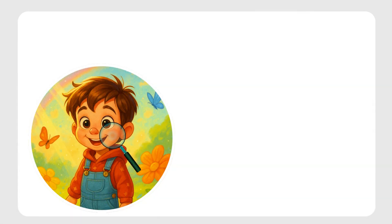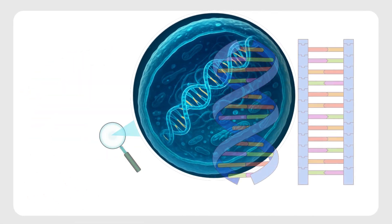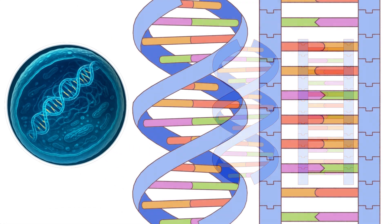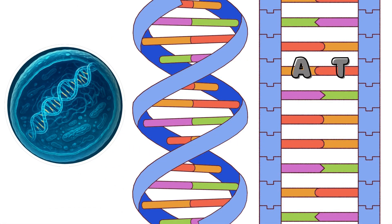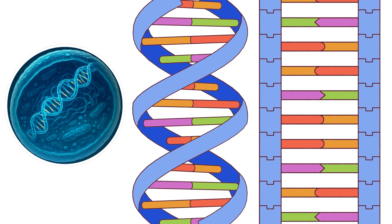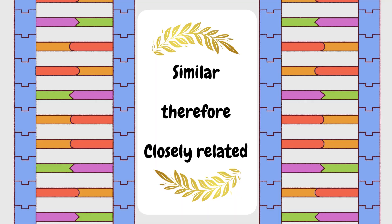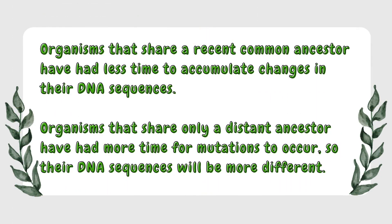Every living organism has DNA inside its cells. DNA carries instructions for the organism and is made of sequences of bases: A, T, C, and G. Scientists can look at the exact sequence of these bases in the DNA of different organisms. The more similar the DNA sequences are between two organisms, the more closely related they are. This is because organisms that share a recent common ancestor have had less time to accumulate changes in their DNA sequences, whereas organisms that share only a distant ancestor have had more time for mutations to occur, so their DNA sequences will be more different.